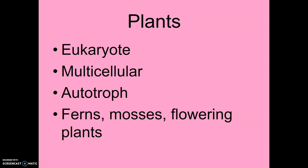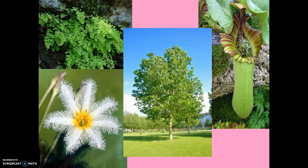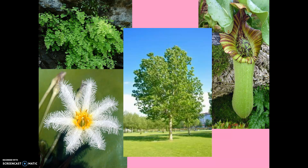Plants are eukaryotic and multicellular. These are autotrophic — they make their own food. Examples include flowering plants, mosses, ferns, and trees. Now, this one is interesting: this can be heterotrophic. This is a carnivorous plant — it actually has acids in it, so when bugs like ants or flies fall into it, it completely disintegrates them and absorbs the nutrients. So carnivorous plants can also be heterotrophic, but for the most part, plants are going to be autotrophic.